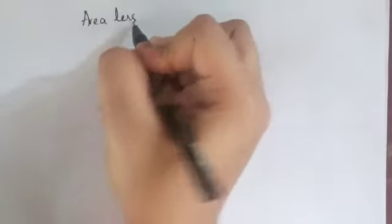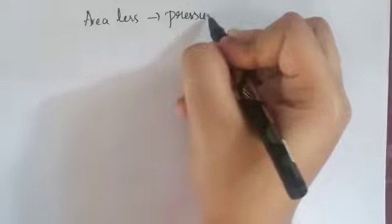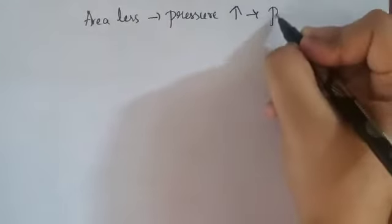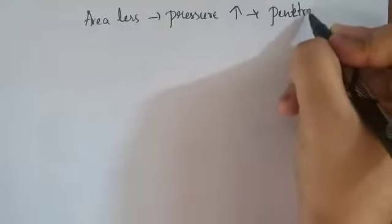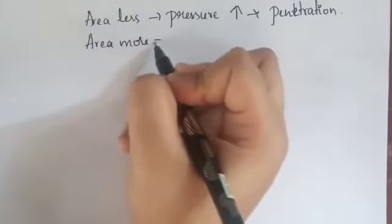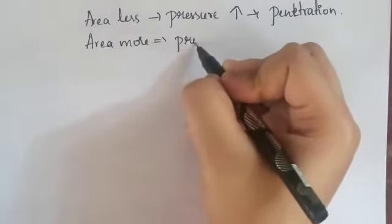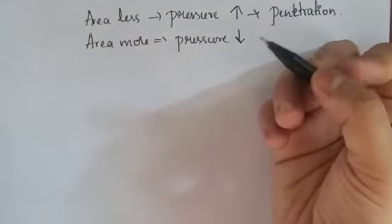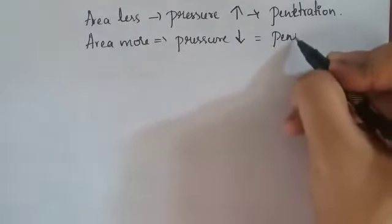We can conclude: if you take a nail, area is less, so pressure exerted will be more, and penetration of that nail will be more. Area less means pressure more, which means penetration will occur. If area is more, pressure will be less, and penetration will also be less.